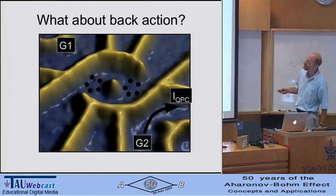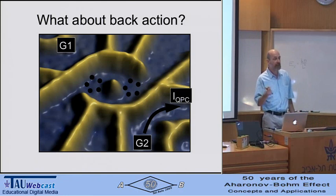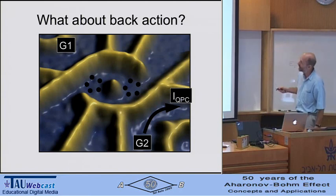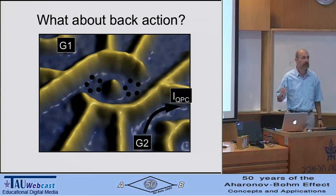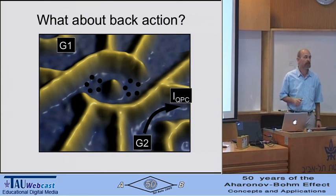That's the sample again: electrons coming from here, dot number two, dot number one, and leaving out to the drain contact, with our little detector. The fact that we are detecting electrons on an individual basis—does it change the measurement outcome? In order to answer this, we have to think more about the detector. The detector is a tunnel barrier whose conductance is a very steep function of the environment—in particular, the charge state of the neighboring system on the left.